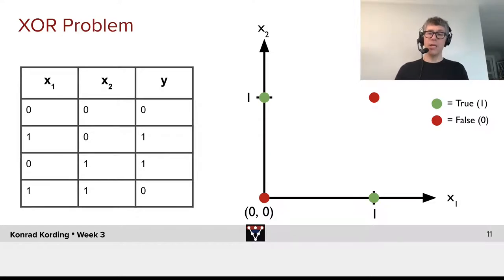So let's visualize that. What we have is we have that basically for 0, 0, and 1, 1, we need to get an output of 0, and for the others, we need to have an output of 1. And what we can directly see here,